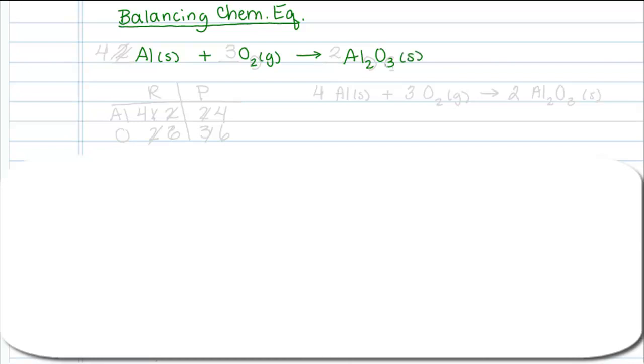I'm going to make a table listing the elements that are involved in this reaction. That would be aluminum and oxygen. I'm going to count how many atoms there are on the reactant side and how many there are on the product side.